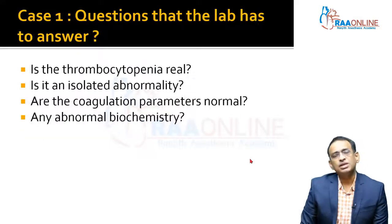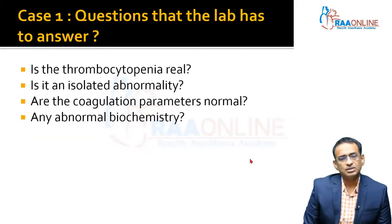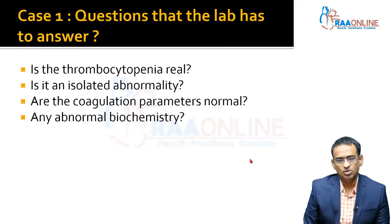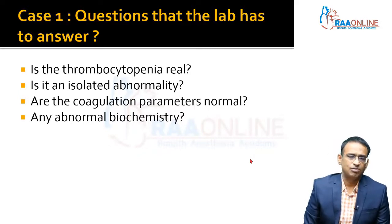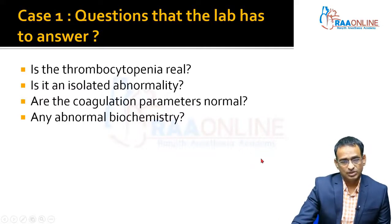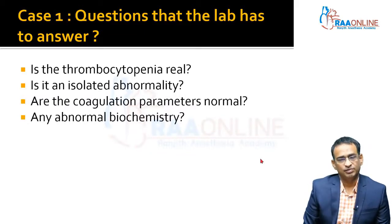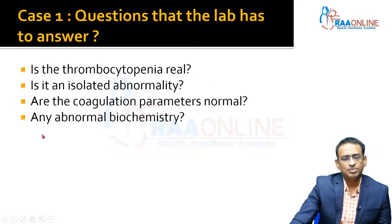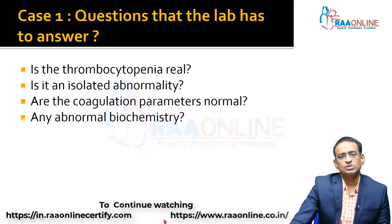There are also certain laboratory questions to answer. First, we need to determine if the thrombocytopenia is real or spurious. Is it an isolated abnormality — just low platelets — or is there accompanying anemia, abnormality of the white cell count, abnormal kidney function, or abnormal liver function? Are the coagulation parameters such as PT and APTT normal or abnormal? For our first patient: biochemistry is normal, coagulation parameters are normal, and it is an isolated abnormality. It is therefore always important to look at a peripheral smear when someone presents for the first time with severe low platelets.